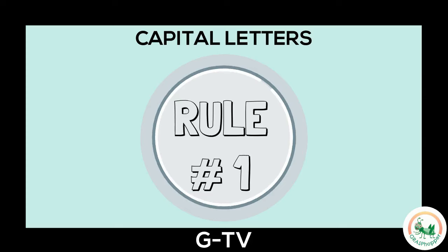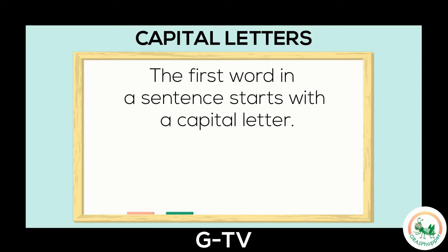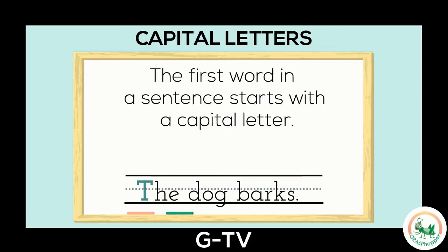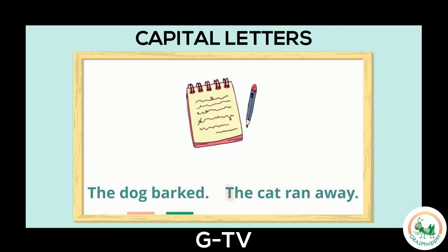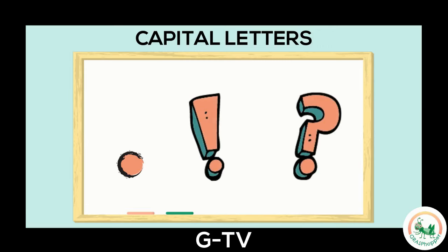Rule number one: write a capital at the beginning of a sentence. The first word in every sentence must start with a capital letter. It's important to start every sentence with a capital so readers know a new sentence is beginning. When we write a bunch of sentences, the capital letter comes after the punctuation, like the period, exclamation mark, or question mark.